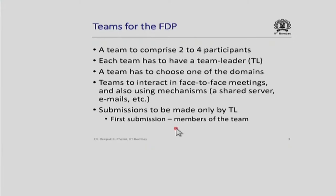The first submission to be done by the team leader is the membership of the team itself. For example, if elected as team leader of a team of 4, the first thing is to inform the FDP coordinators: your name, email ID, and the 3 other colleagues who are members. The format in which this information should be submitted will be put up on the Moodle, which you can check when you log in this afternoon.